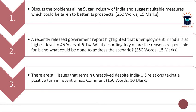The first question is: discuss the problems ailing the sugar industry of India and suggest suitable measures which could be taken to better its prospects. The word limit is 250 and the maximum marks are 15. I also uploaded a video on the sugar industry today — you can watch that video and then attempt this answer in a comprehensive way.